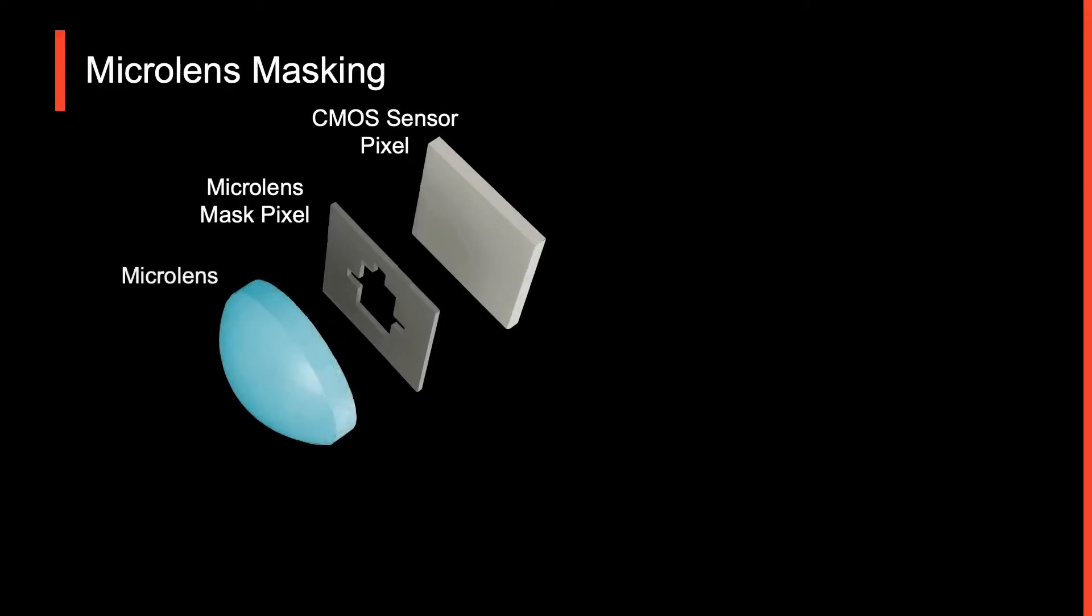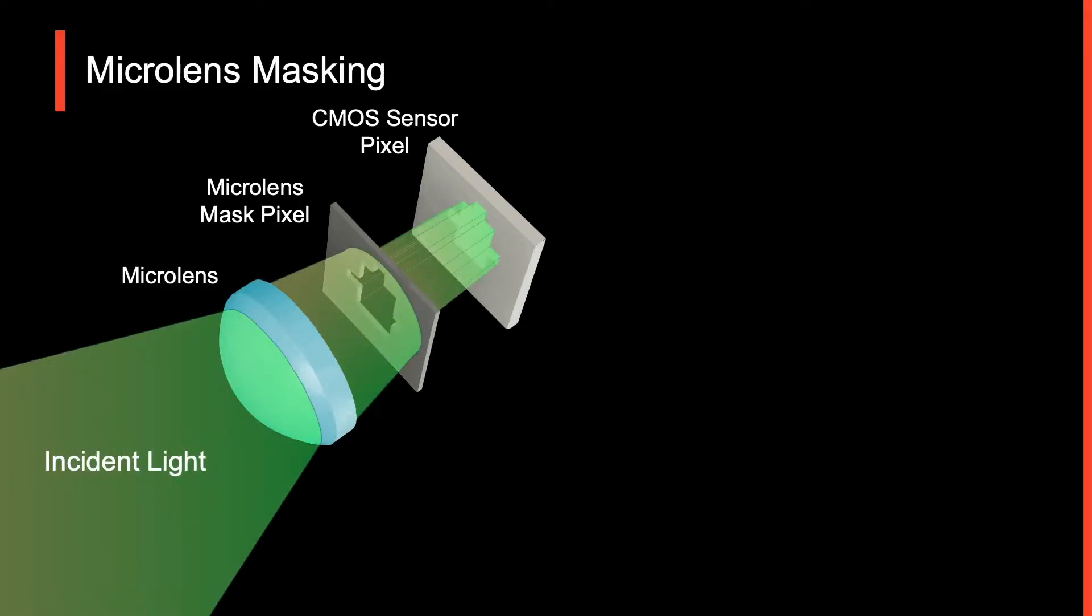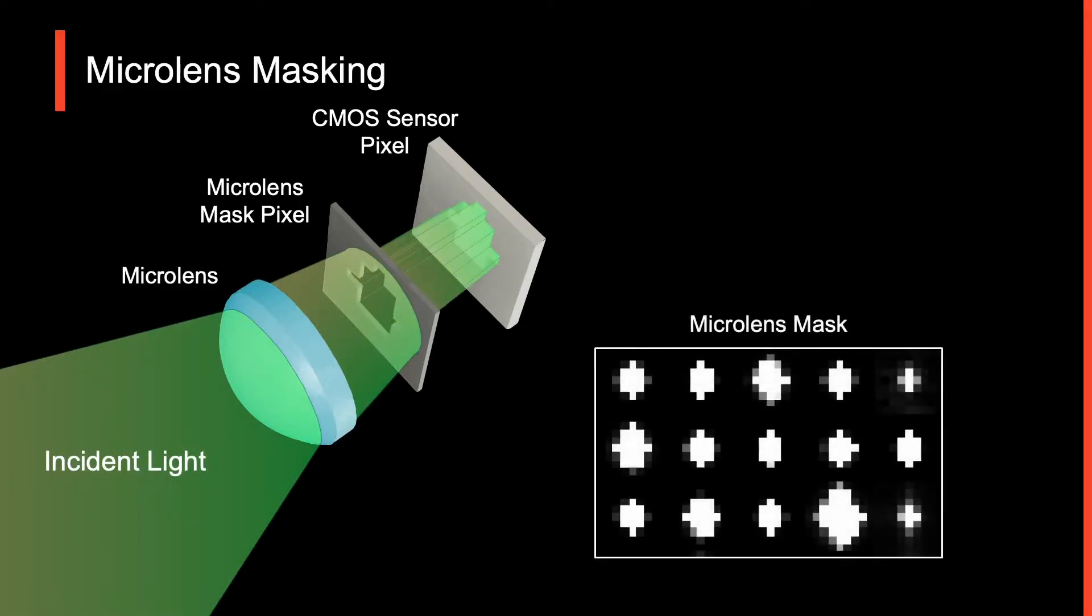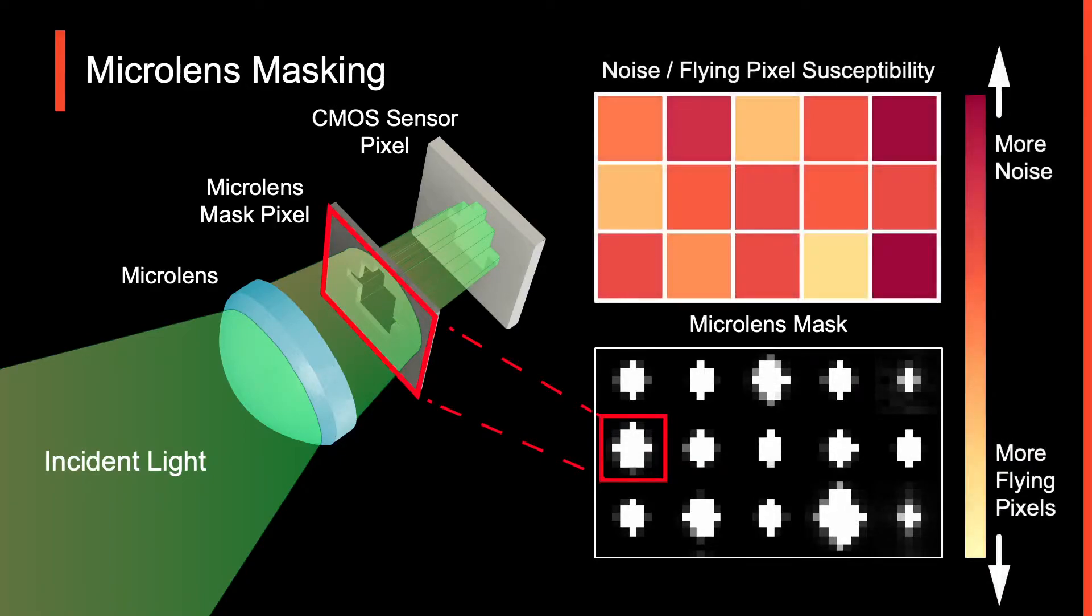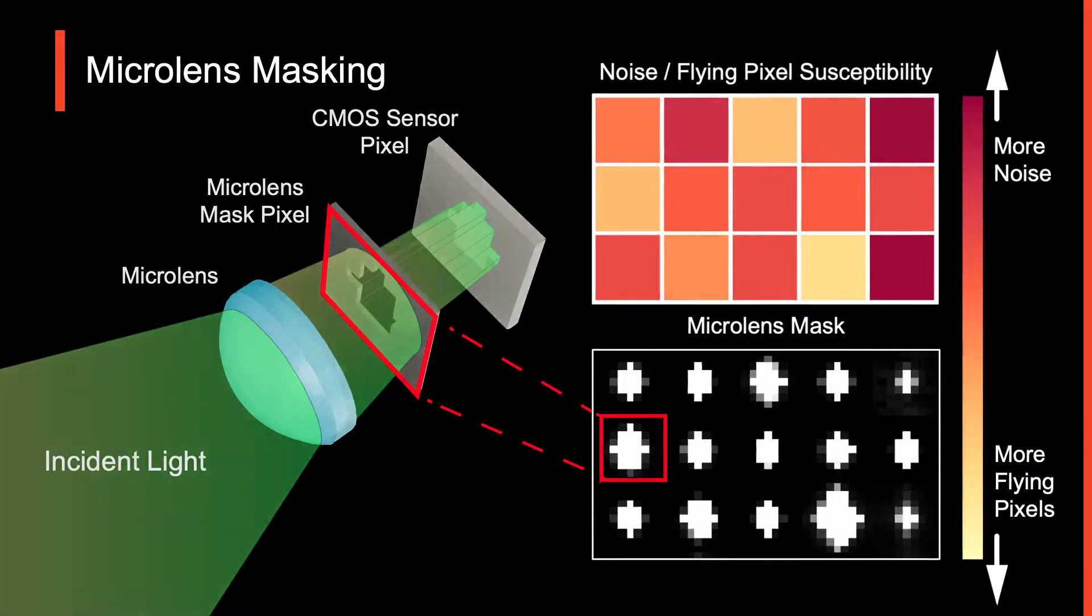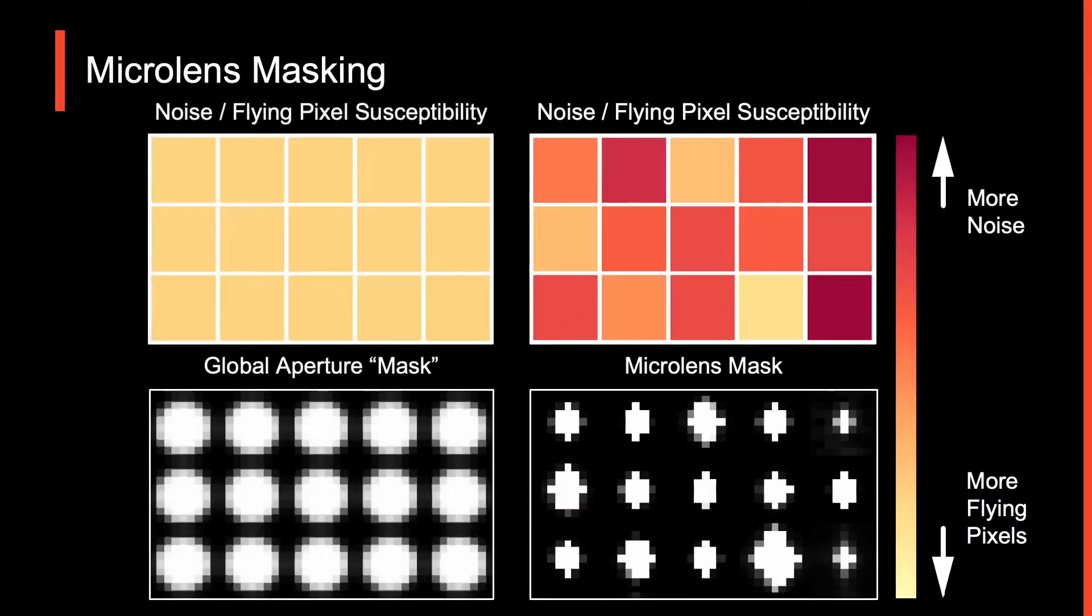We propose MASTA, which, true to its name, augments the camera pipeline by inserting a microlens mask between the sensor pixel and its microlens. This mask selectively blocks incident light paths, allowing us to effectively give each pixel its own custom aperture. We can thus augment our camera to have spatially varying susceptibility to noise and flying pixels, and leverage this to denoise and deflying pixel adjacent measurements, something a global aperture can't achieve.